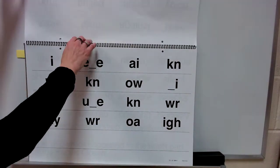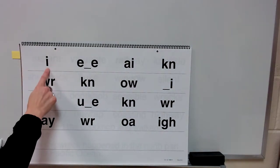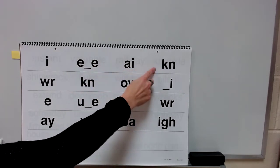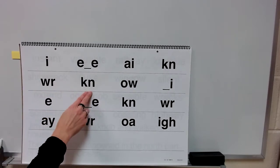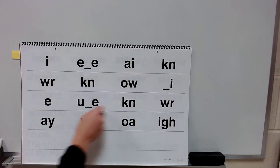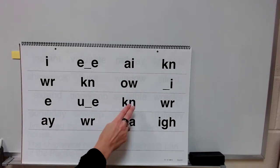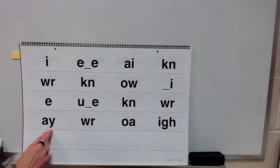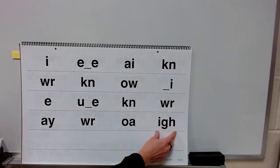Now let's practice the sounds for some spellings. Get ready. The sounds practiced include: i, e, e, n, n, n, o, i, e, e, nn, rr, a, rr, o, i.